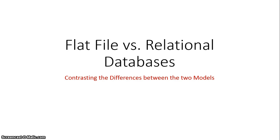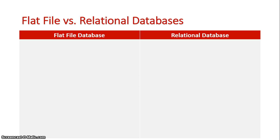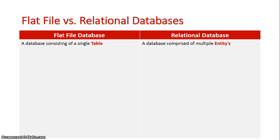Let's now look at the difference between flat file and relational database models. These are the two main types of databases discussed in the Information Systems and Databases unit. With a flat file database, it is made using a single table, whereas a relational database contains multiple tables, or what's known as multiple entities.